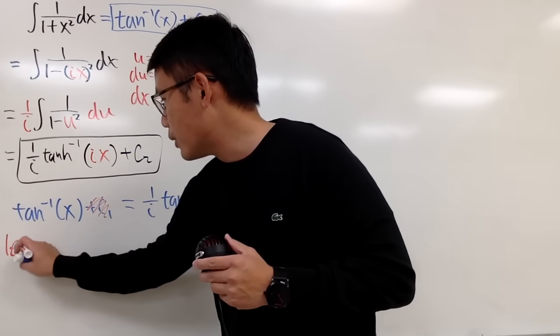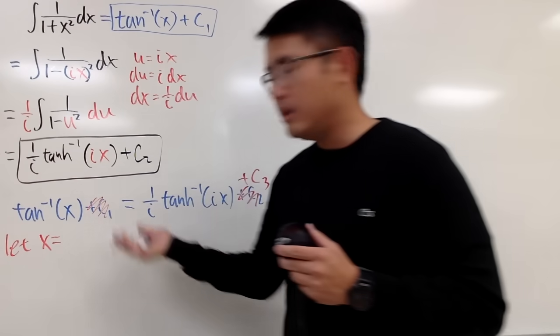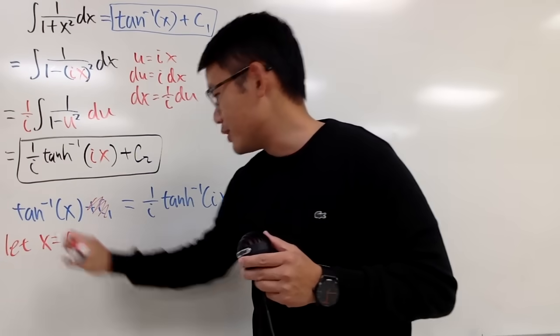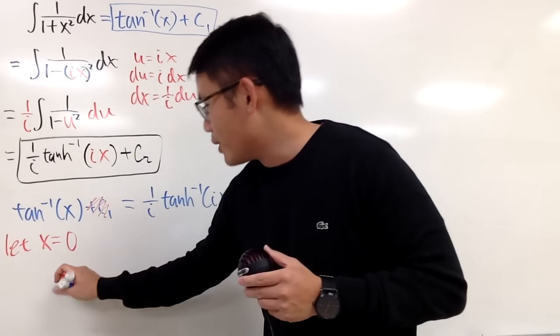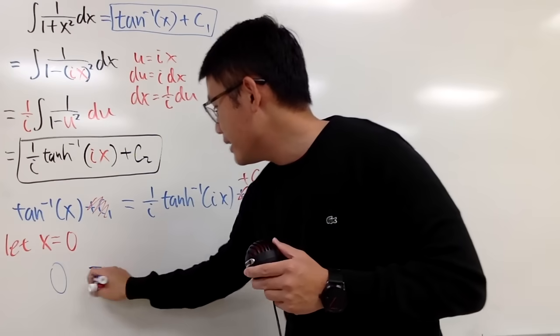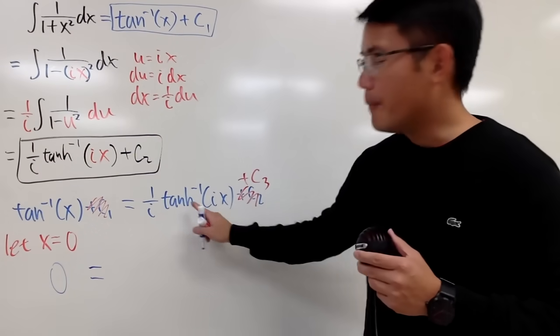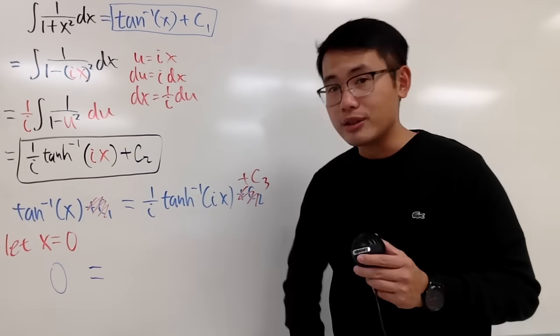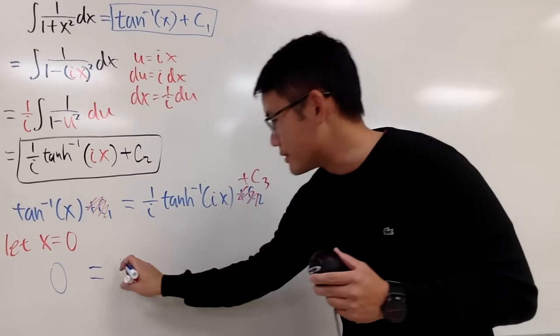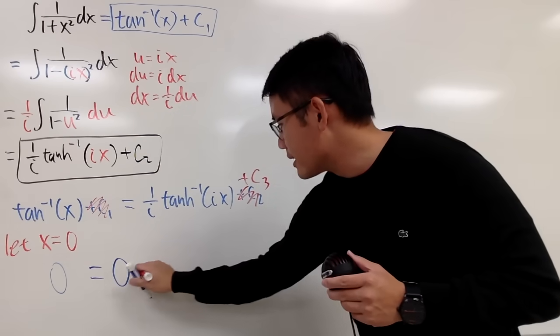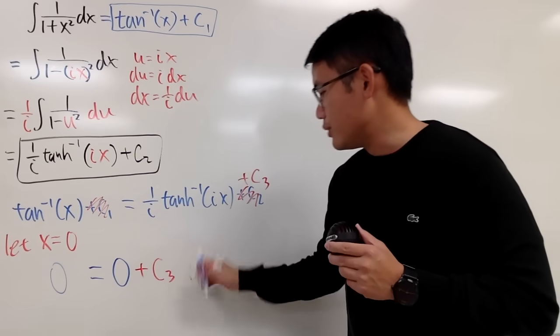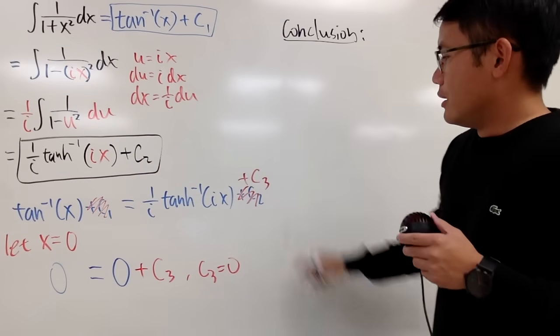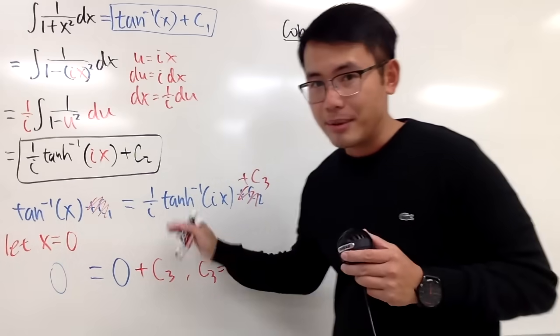And now, all I'm going to do is I will just pick some nice easy x value into all the x. Of course, 0. On the left-hand side, inverse tangent of 0, we get 0. And if you put 0 right here, inverse hyperbolic tangent of 0 is also 0 times 1 over i is still 0. So you have 0, and you add that c3. Of course, you can see that c3 is equal to 0.